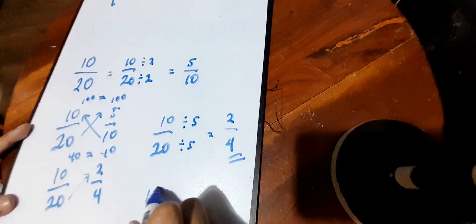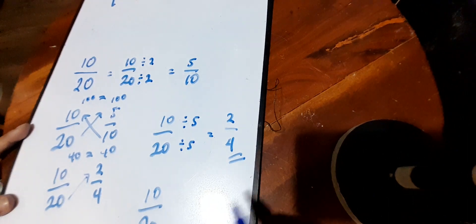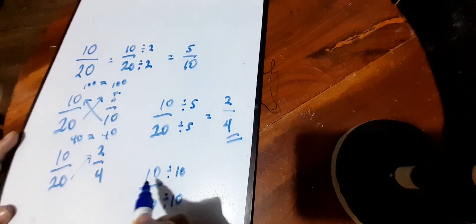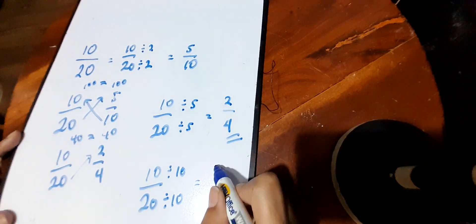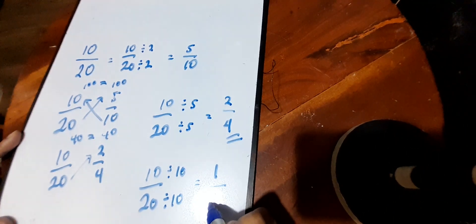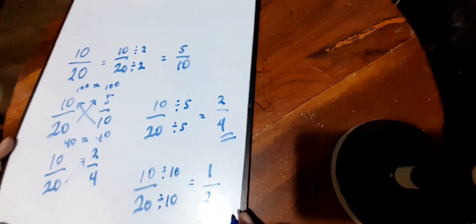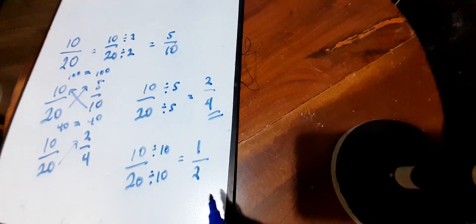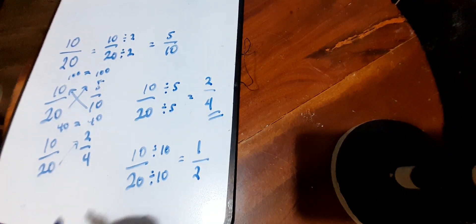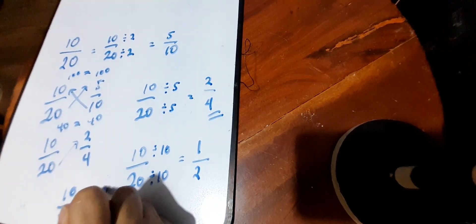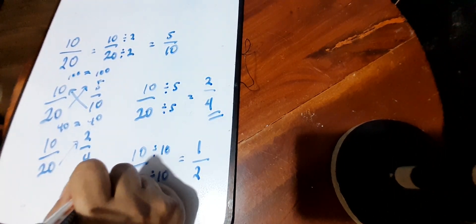Ten and twenty can also be divisible by ten. Since they are divisible by ten, ten divided by ten is one, and twenty divided by ten is two. So ten over twenty is also equal to one-half. Checking again — ten over twenty and one-half cross multiply. Twenty times one is twenty, and ten times two is also twenty.